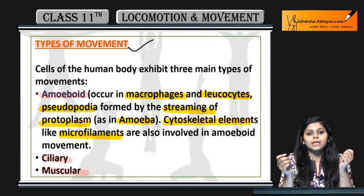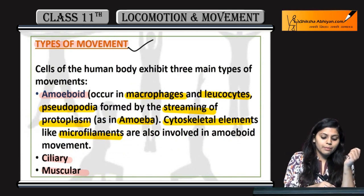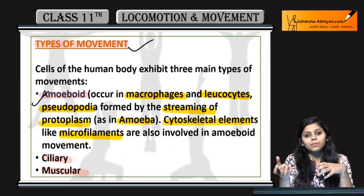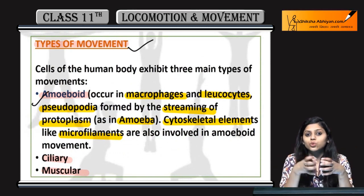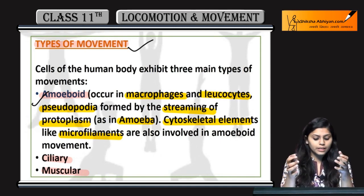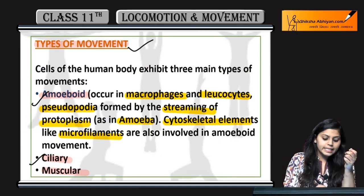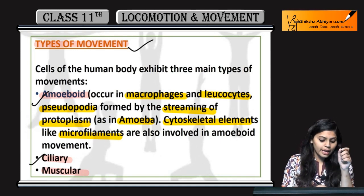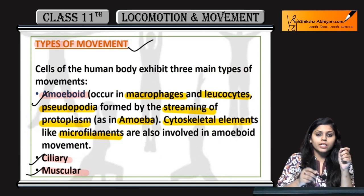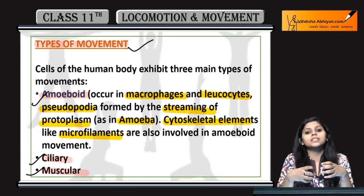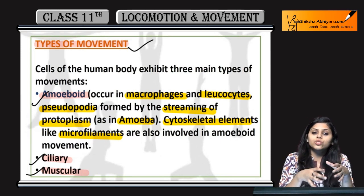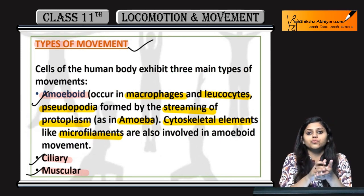Yaad rakhna: muscular locomotion requires coordinated activity of muscular, skeletal, and neural systems. Types of movement mein: amoeboid movement mainly amoeba mein hoti hai aur pseudopodia ke through hoti hai; ciliary mein cilia involved hote hain; aur muscular mein muscles are involved in locomotion and movement.